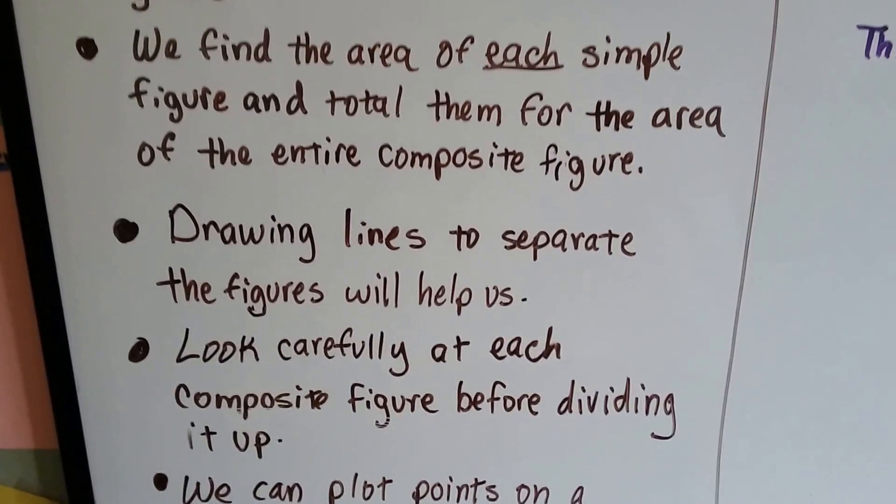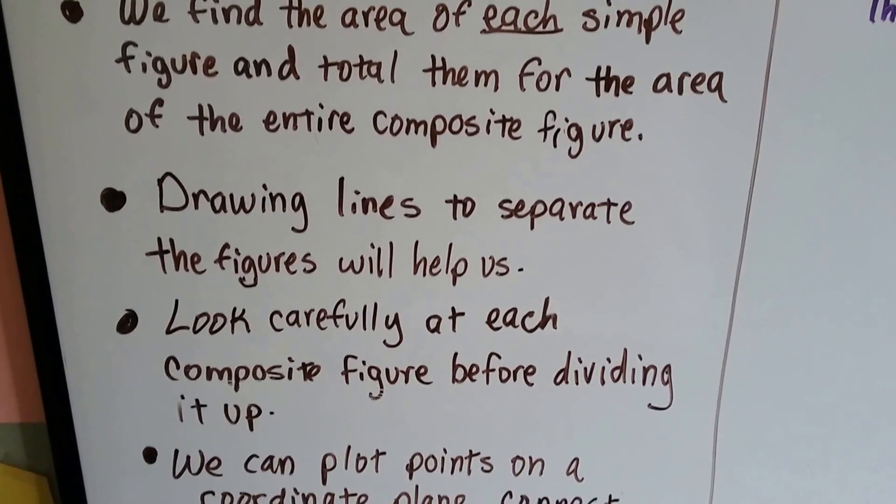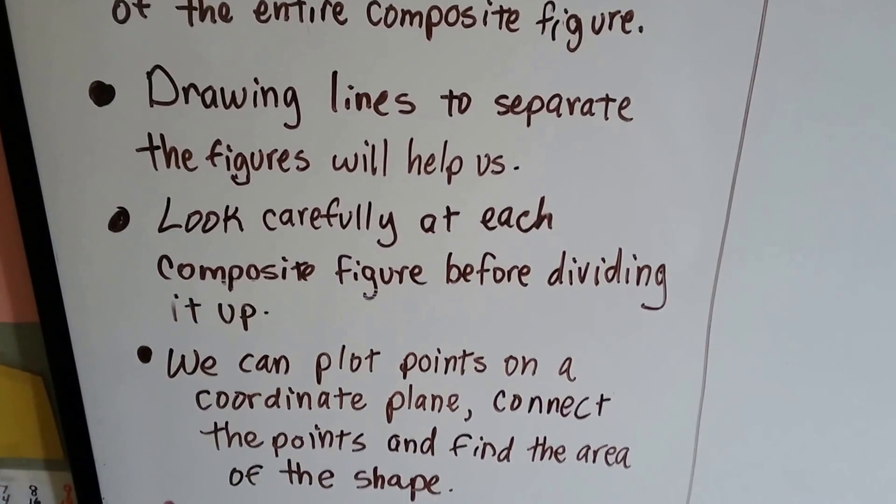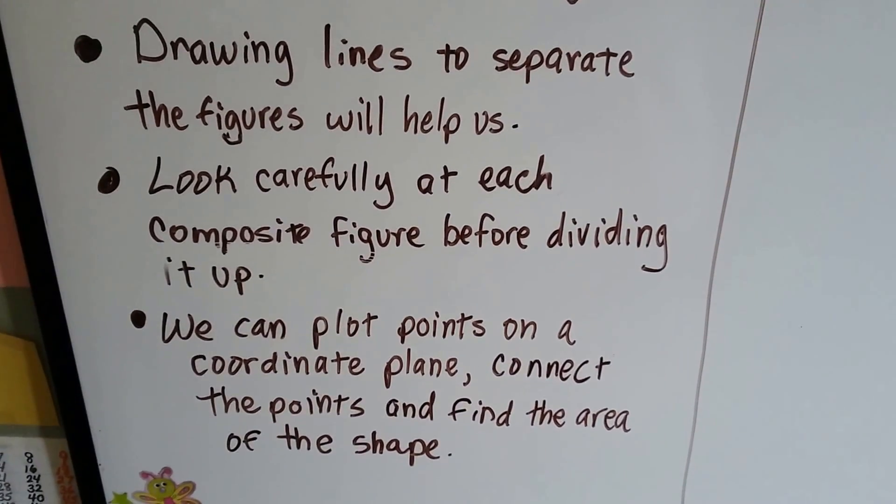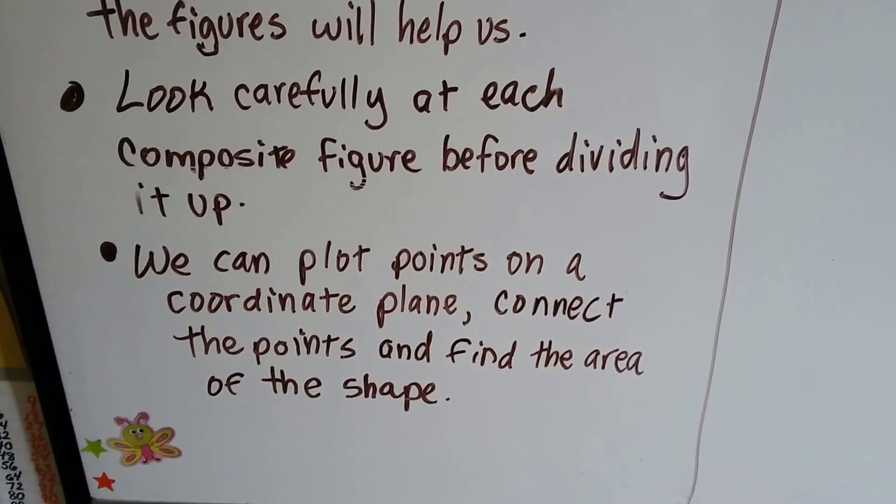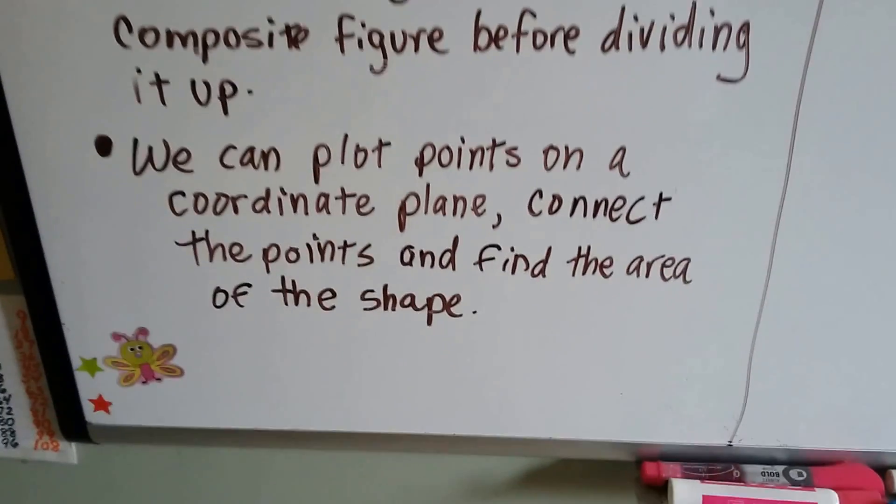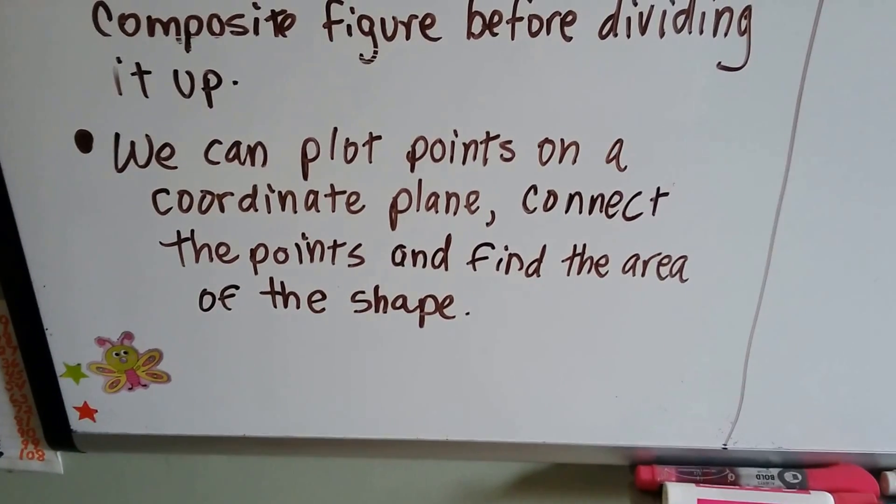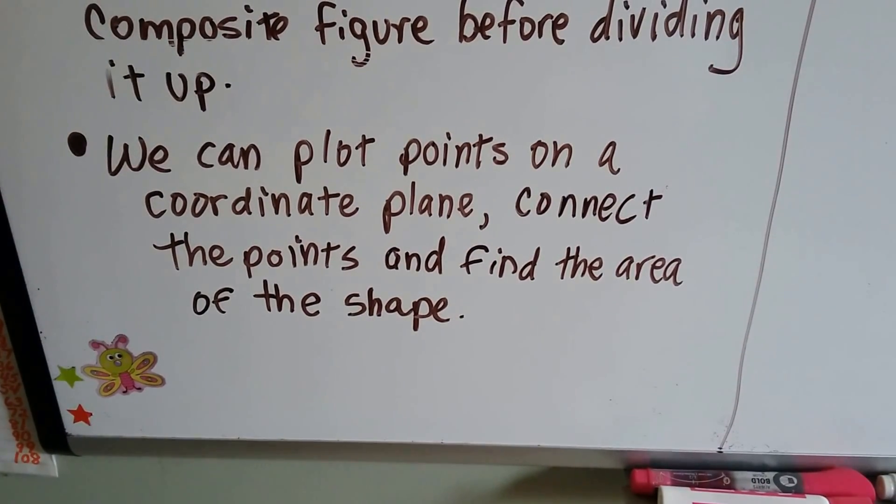We find the area of each simple figure and total them for the area of the entire composite figure. We draw lines to separate the figures so it'll help us. We look carefully at each composite figure before dividing it up. And now we can plot points on a coordinate plane, connect the points, and find the area of the shape.